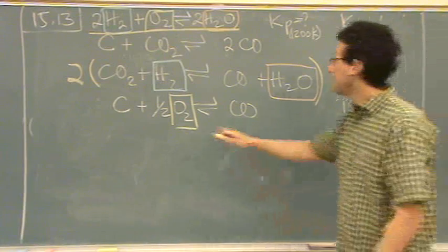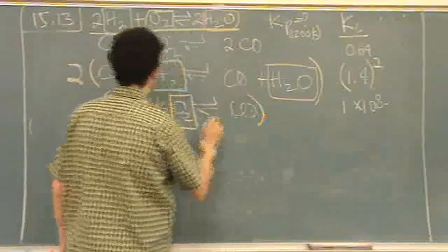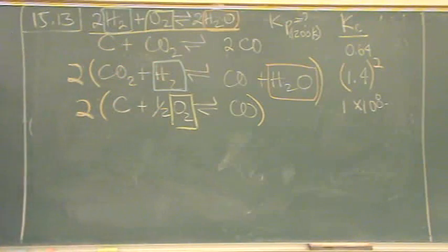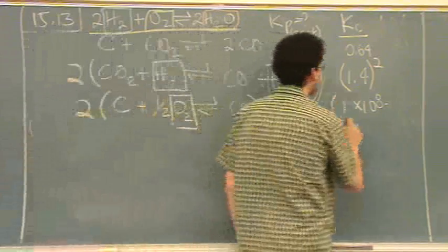Let's see what else. We've got O2 down here. I have one in the reactant. Here I have a half. So I need to multiply that by two also. So this I also square.